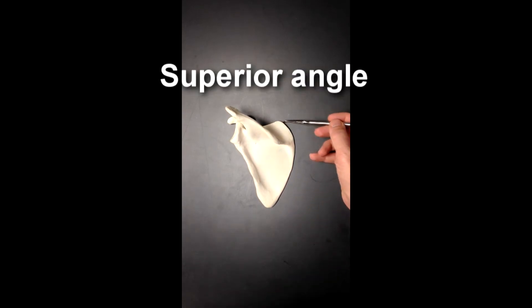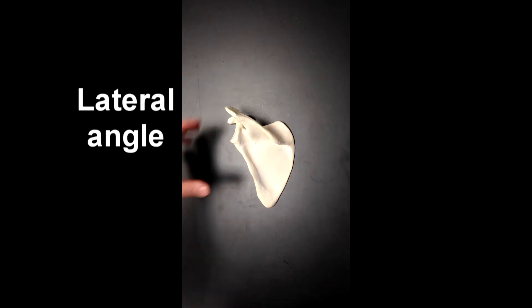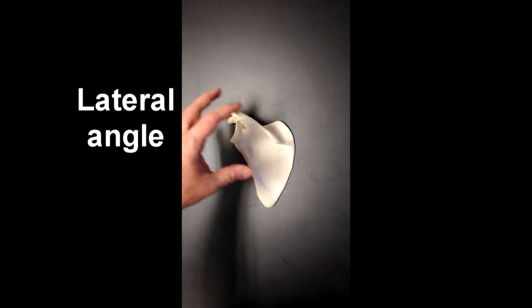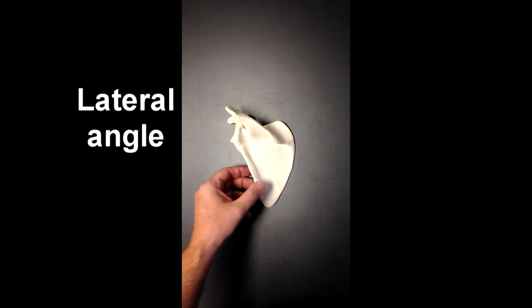This would be the superior angle of the scapula, up here. And then the lateral angle of the scapula, if you can imagine the scapula being a triangular shape, this would be the lateral angle of the scapula. And there's many structures out on this lateral angle of the scapula.